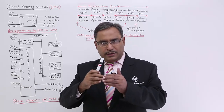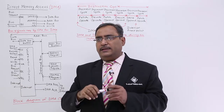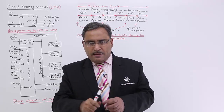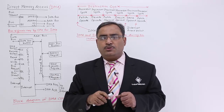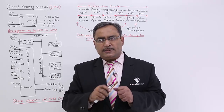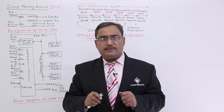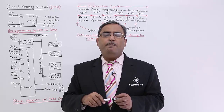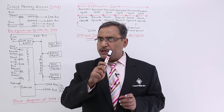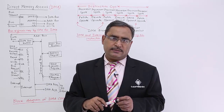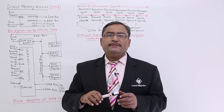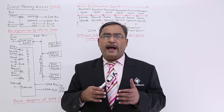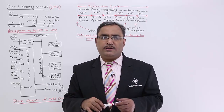When the processor grants access to the DMA, the DMA can then use the data buses and address buses and perform the required data transfer between the memory and the IO devices. As a result, the DMA controller handles the data transfer situation.